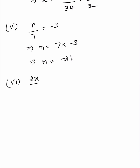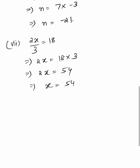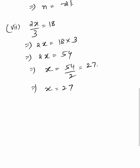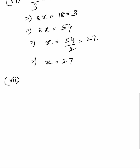Seventh: 2x equals 54, so x equals 54 divided by 2, giving x equals 27.